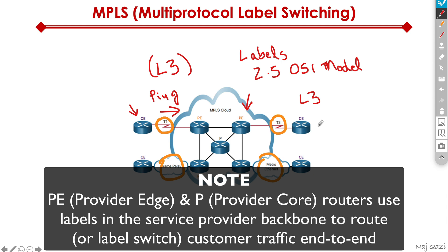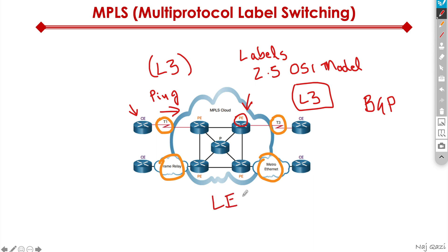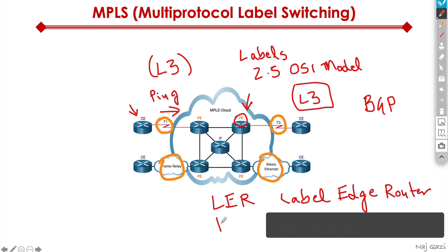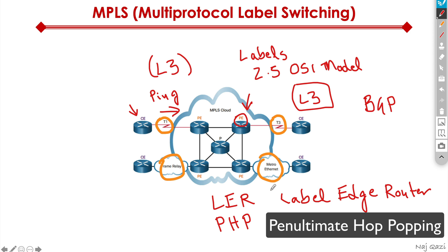This is all seamless to you as the end user. You do not know what's happening in the core. All you know is you have a layer 3 circuit and you're running maybe BGP as a routing protocol — that's how you're learning all the routes. But the service provider is using labels. The PE is also considered an LER, or label edge router. It puts the label on and takes the label off depending on whether it's an inbound or outbound packet. That's called PHP, or Penultimate Hop Popping — right before the packet is about to leave the MPLS cloud, we pop the label so the CE doesn't get confused and does its layer 3 lookup.